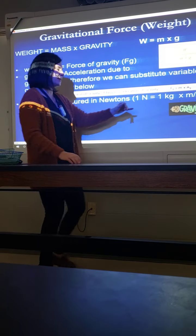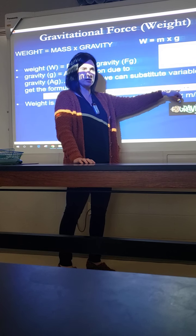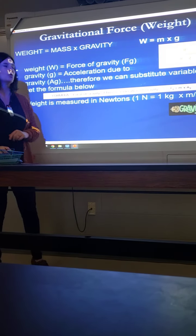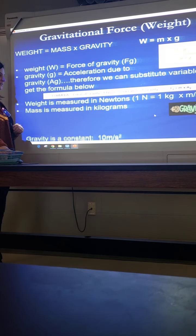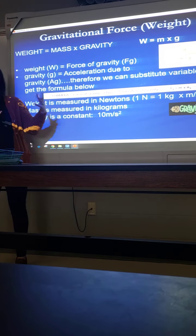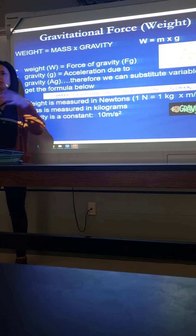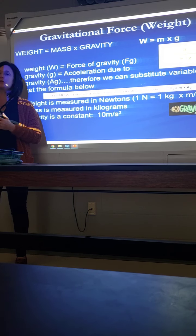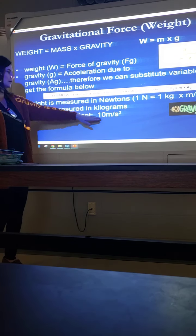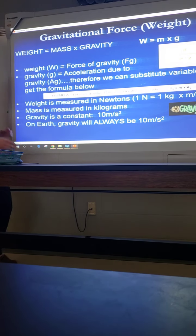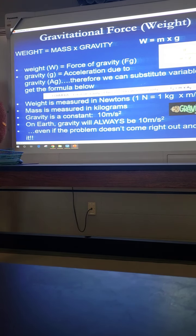Weight is measured in newtons. Mass is still going to be in kilograms. Our gravity constant here on Earth is 10 meters per second squared. In problems where you're in a simulation or on Mars, use whatever acceleration is given — you can't use 10 unless you're here on Earth. But typically that won't be given; you'll have to assume you're on Earth. So on Earth, acceleration will always be 10 meters per second squared, and a lot of times the problem won't come right out and state that.